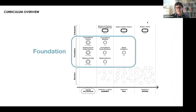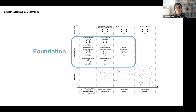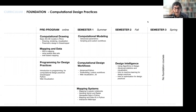After that we have the foundational courses — four classes in addition to the online foundation. One is called computational modeling, another is computational design workflows, and the third is mapping systems, all in the summer intensive. These introduce you to the various kinds of projects you might want to engage in once you graduate. The fourth, in the fall semester, is design intelligence.